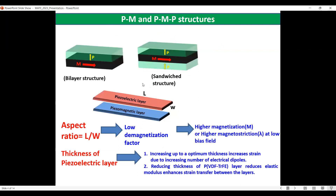In both the PM and PMP laminate structures, the magneto-electric effect depends upon the aspect ratio, that is length divided by width. Whenever we decrease the length, there is an increase in the demagnetizing factor. Increasing the aspect ratio leads to a lower demagnetizing factor, which increases the magnetization or flux concentration in these composites and gives higher magnetostriction or higher magneto-electric voltage.